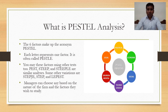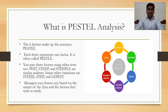There are six factors that make up the acronym PESTEL. P stands for political, E stands for economic, S stands for social, T stands for technological, E stands for environmental, and L stands for legal. These factors are also used in other frameworks such as PEST, STEEP, and STEEPLE, as well as variations like STAPLE, G-STEP, and LIPIST. Managers can choose any based on the nature of the firm and the factors they wish to study.